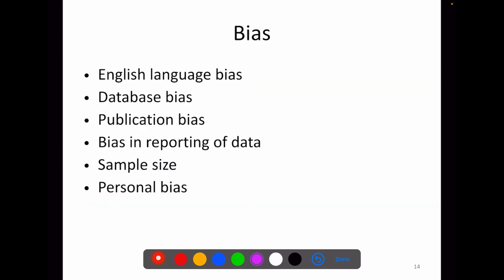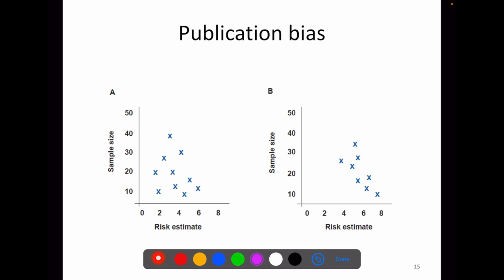Now we move on to the bias in meta-analysis. We have English language bias, where effect sizes of articles presented in English language are different from other languages. We have database bias, and the most common bias encountered in meta-analysis is publication bias. There is also bias in reporting data, bias due to sample size — that is sampling error — and personal bias when studying the effect of an intervention or treatment. To identify publication bias, we use the funnel plot. We put the risk estimate on the x-axis and sample size on the y-axis.